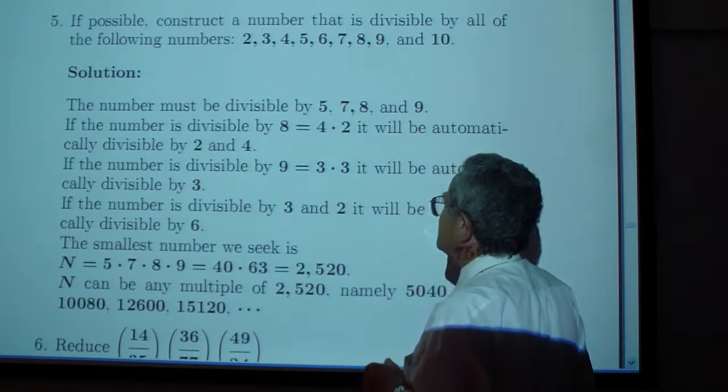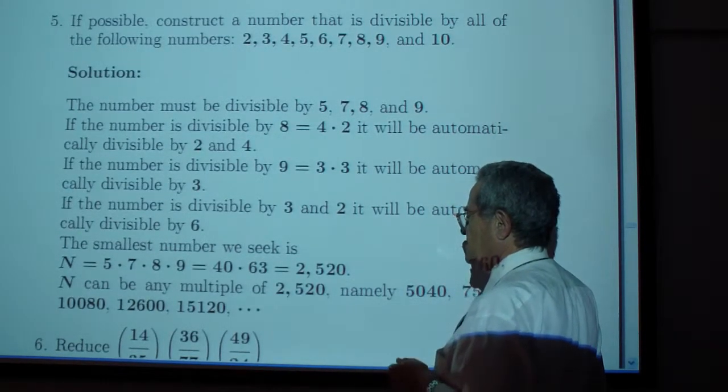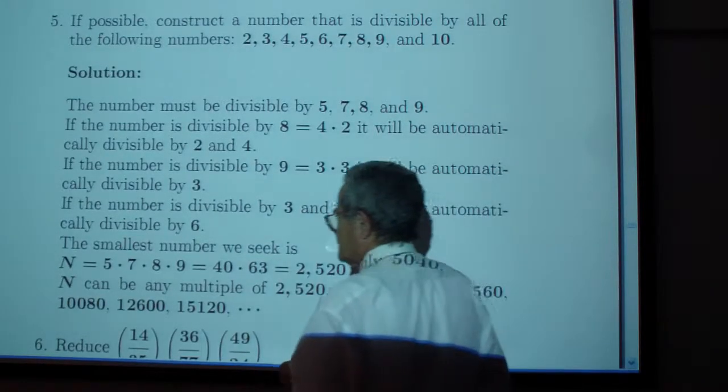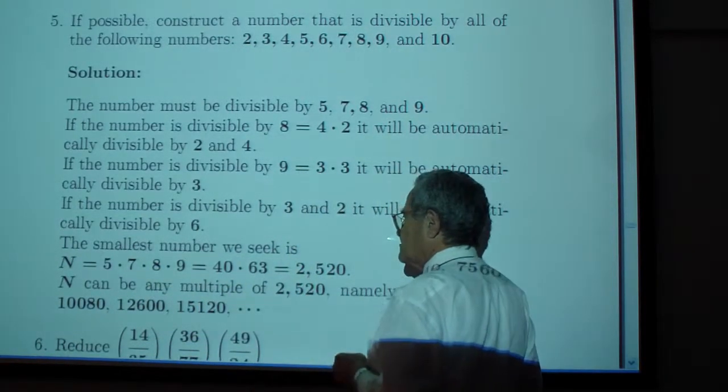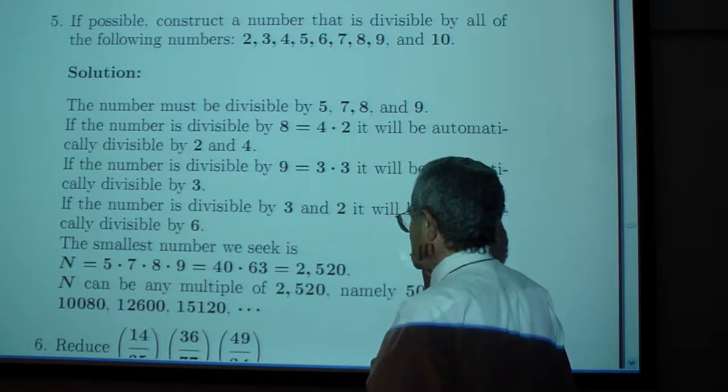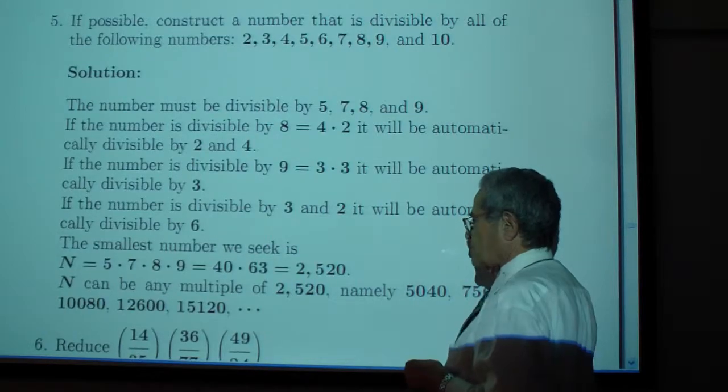So we don't need to worry about 2, 3, 4, 6, and 8. Let's multiply 5 by 7 by 8 by 9, that gives us 2520. The number you're after could be that number or a multiple of that number.